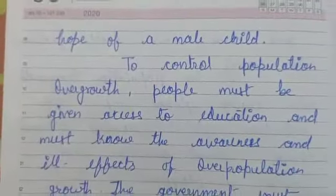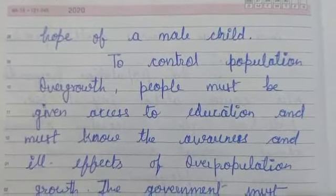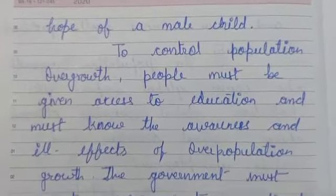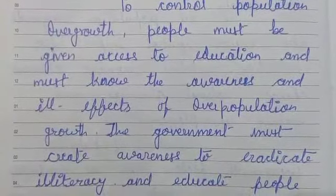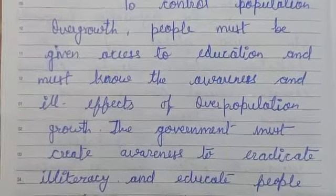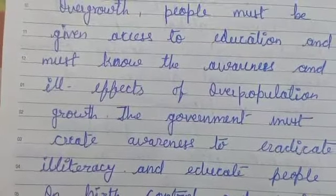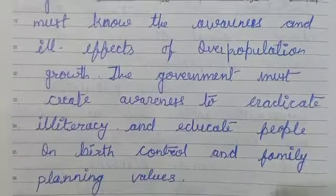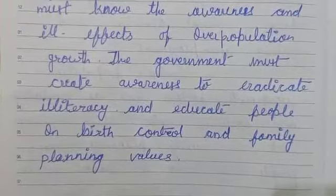To control population overgrowth, people must be given access to education and made aware of the ill effects of overpopulation. The government must create awareness to eradicate illiteracy and educate people on birth control and family planning values.